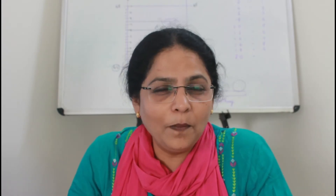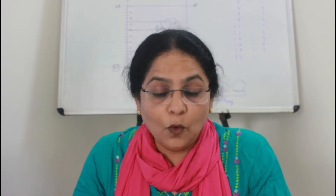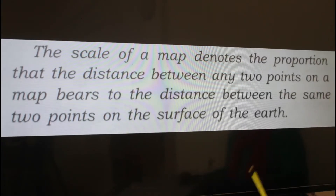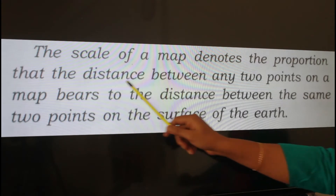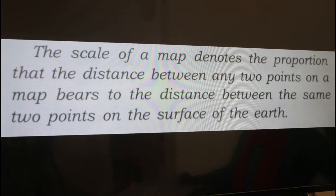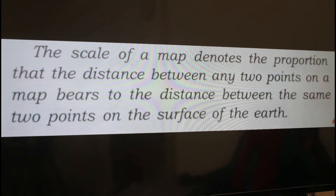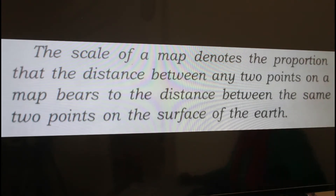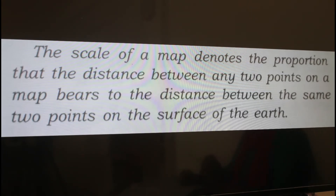So for that, we use a proper scale for the topo sheet or for making any kind of map. The definition of scale is: the scale of a map denotes the proportion that the distance between any two points on a map bears to the distance between the same two points on the surface. To find the scale, the formula is: Scale = map distance between two points divided by ground distance between the same points.